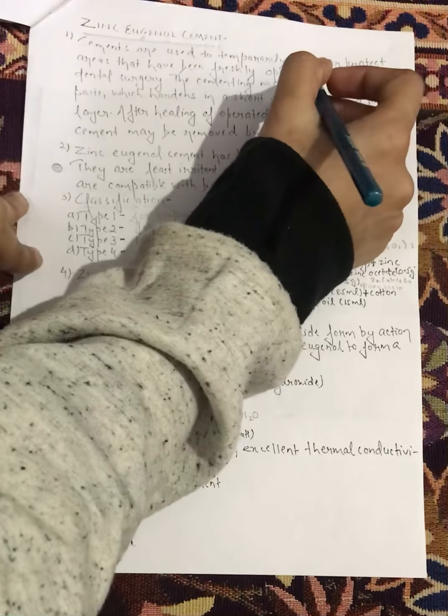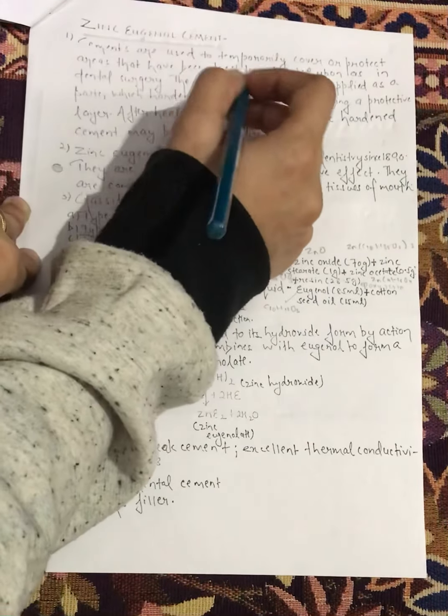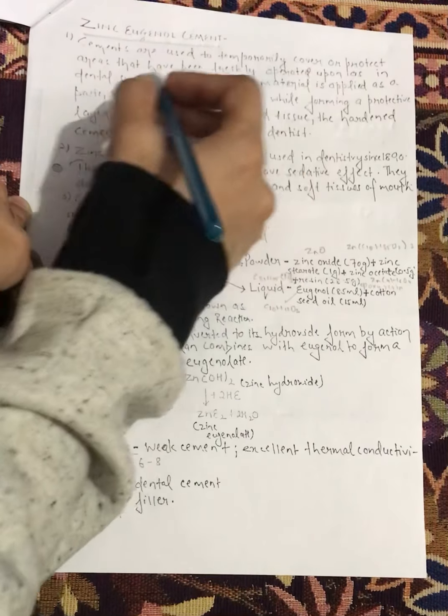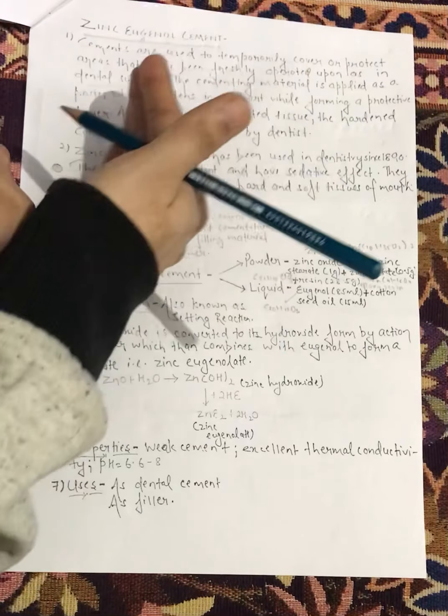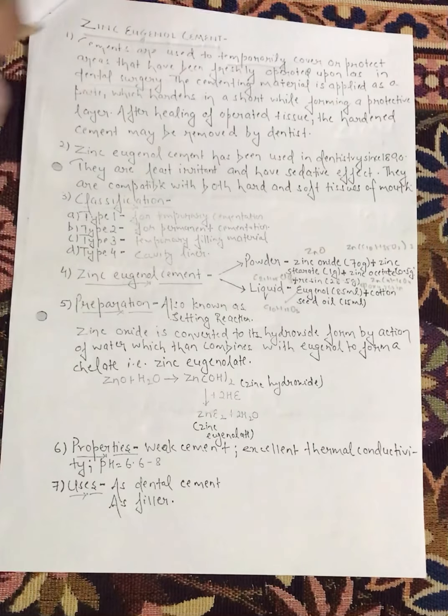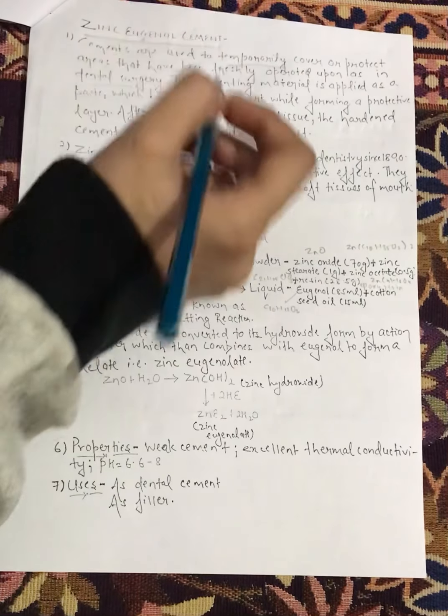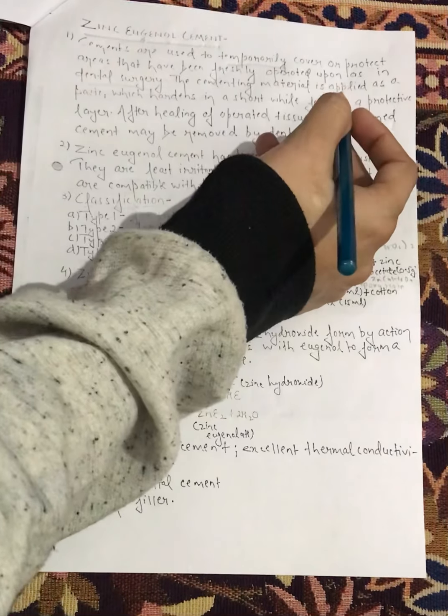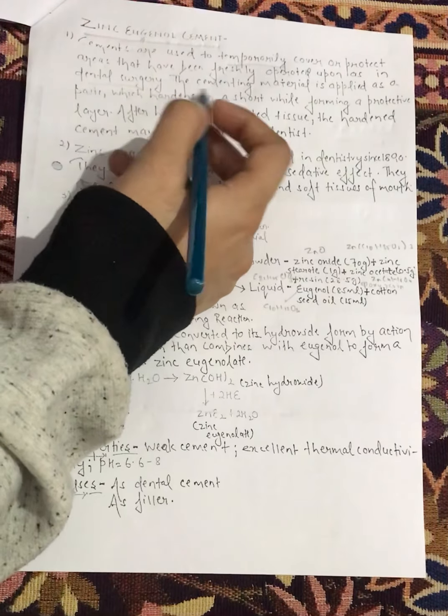Cements are used to temporarily cover and protect the areas that have been freshly operated upon, as in dental surgery. If we have to cover it temporarily or permanently, we can use it. We use zinc eugenol cement. The cementing material is applied as a paste, which hardens in a short while.